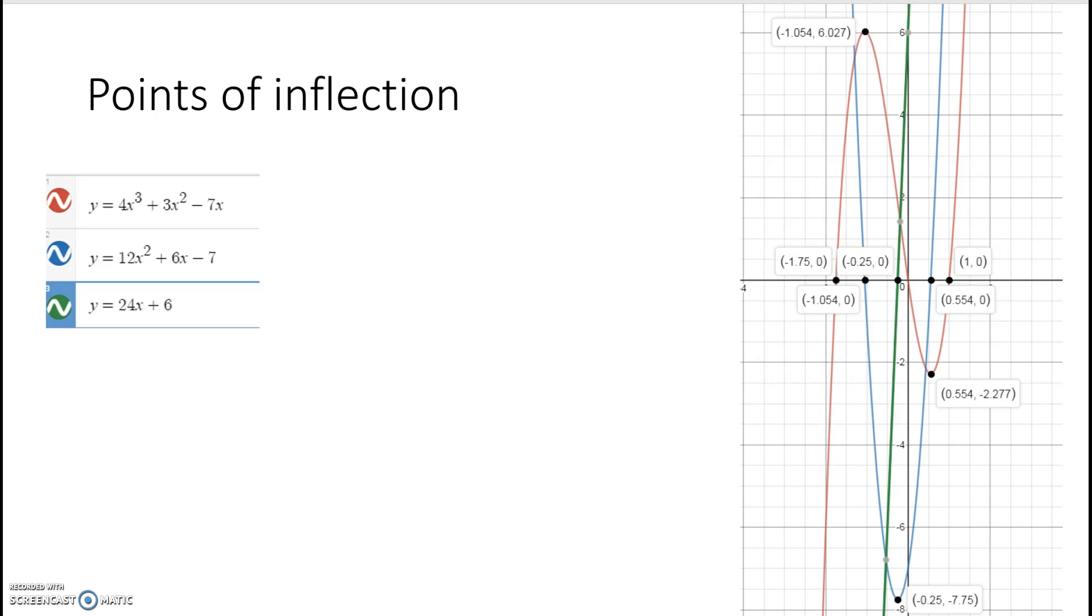I've drawn some diagrams, some graphs in Desmos. Now, the first one is y, this one is actually y dash, and this one is y double dash. So the red one is the cubic, that's the original function. The blue one is the derivative, the first derivative, and the green one is the second derivative.